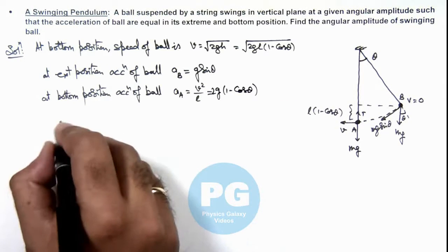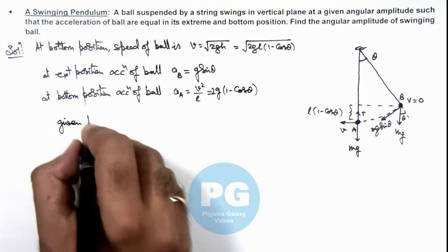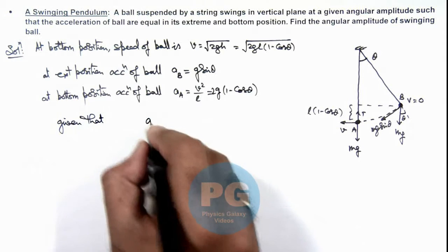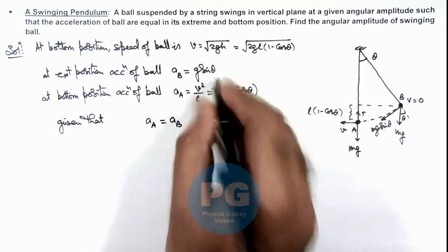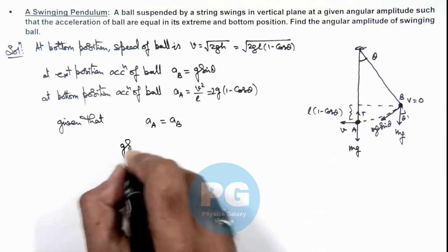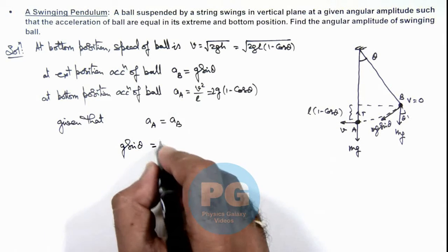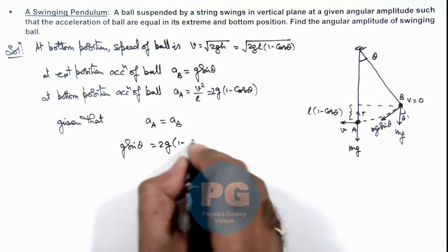And we are given that acceleration of ball at point A and B are equal, so if we equate the two, this gives g sin theta is equal to 2g(1 - cos theta).